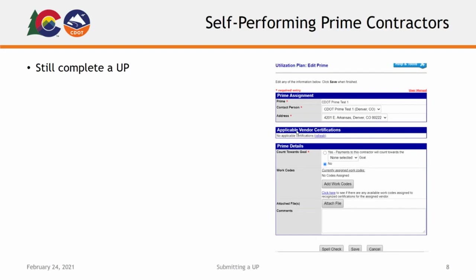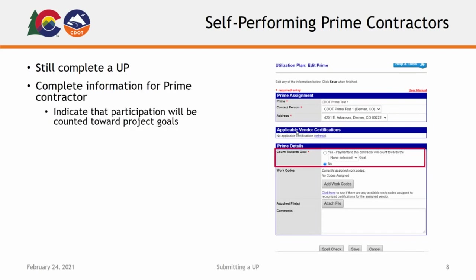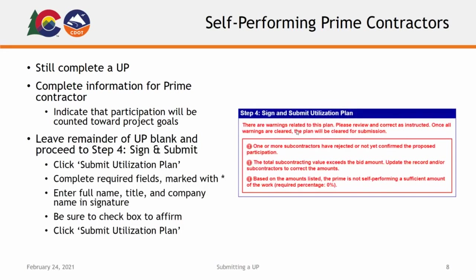If you, as a prime contractor, will be self-performing any work on the project for DBE commitment consideration, you will still complete a utilization plan for this contribution. In this case, you will complete the information pertaining to your organization via the Edit link. Here, you will indicate that your work will count towards the project's certified DBE participation goals by selecting Yes and selecting DBE from the drop-down menu. Click Save to save this information. If you are contributing all DBE participation to the project, you will leave the remainder of the utilization plan blank and proceed to Step 4, Sign and Submit Utilization Plan. Otherwise, if additional subcontractors will receive DBE credit, continue completing the utilization plan.